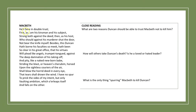So here we go. 'He's here in double trust.' Macbeth is thinking about this quite calmly. Double trust means that Duncan thinks of him as his cousin, his kinsman, and his subject. 'Both strong against the deed' — in other words, who is going to kill their cousin and loyal subject?